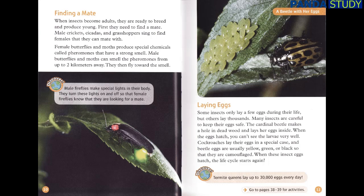Laying eggs. Some insects only lay a few eggs during their life, but others lay thousands. Many insects are careful to keep their eggs safe. The cardinal beetle makes a hole in dead wood and lays her eggs inside. When the eggs hatch, you can't see the larvae very well. Cockroaches lay their eggs in a special case, and beetle eggs are usually yellow, green or black so that they are camouflaged. When these insect eggs hatch, the life cycle starts again.